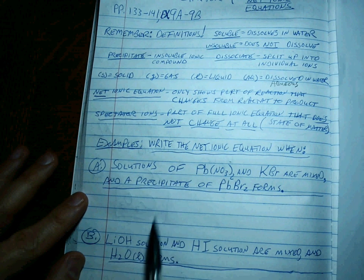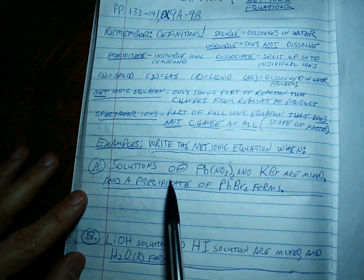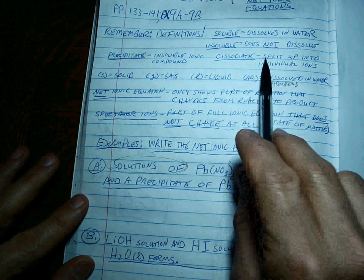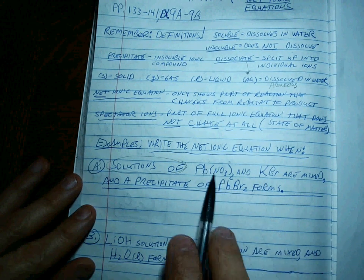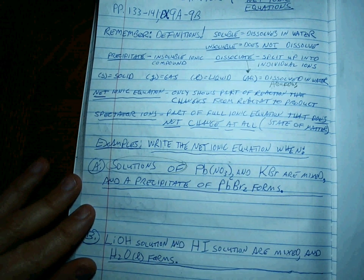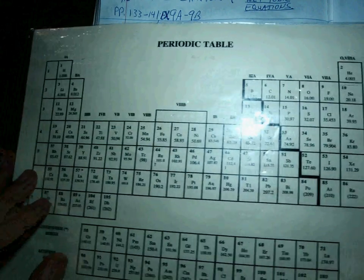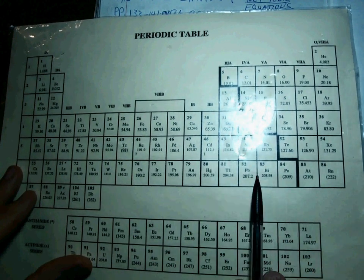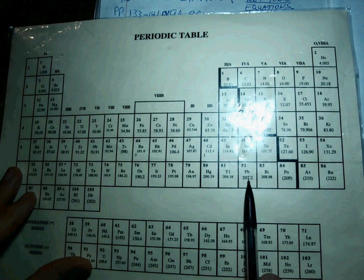Solutions dissolved in solution — solutions of Pb(NO₃)₂ and KBr. These are two ionic compounds that dissociate, meaning they split up into their individual ions. Can you look at this and write the individual ions? You may not be able to tell what lead is from the periodic table. Lead is on this side of the stair steps, which means it's a metal, which means it has charges on ions that you can't predict.